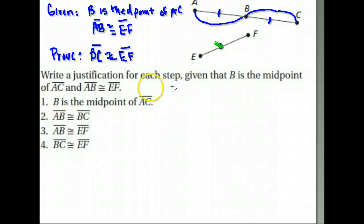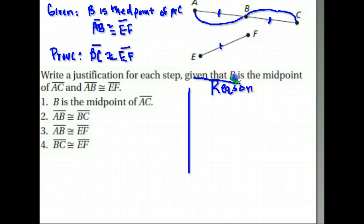Now we have to write that out in steps and justify each step. Let's take a look at our reasons. Here's our statements over here; we need the reasons. What's our justification for each of these things happening? Why do we know B is the midpoint of AC? That was given to us. Your first step typically is your given information. We were given that B is the midpoint of AC. They told us that, so our reason is given.